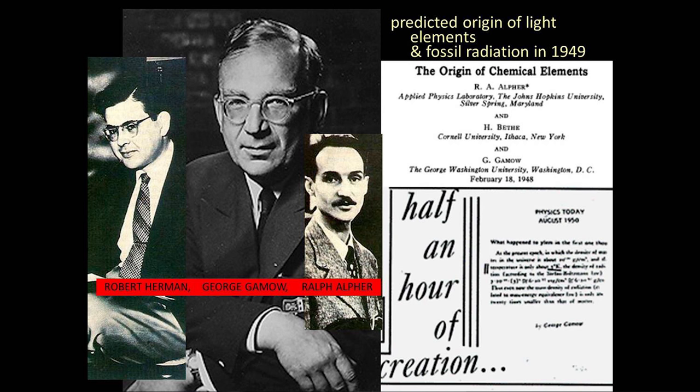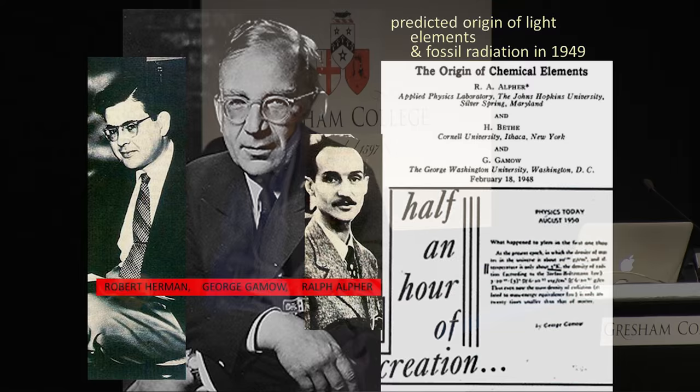Let's begin with the Big Bang and the light elements. Gamow was the pioneer of this idea. He was the first one who took very seriously the notion that the universe was very hot at the beginning, and therefore was the ideal environment for nuclear reactions to make elements. With his student and his colleague, Alpher and Herman, they basically talked about the first half hour of the universe and argued that the elements were made.